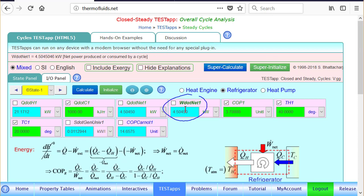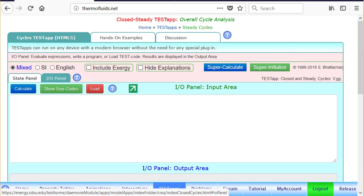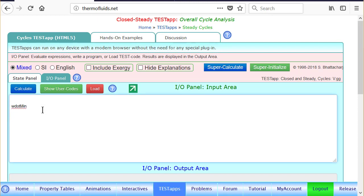we can also find the minimum power required because we know the Carnot COP and we know how much heat has to be extracted. So you go to the IO panel for that and write an equation. Suppose we declare a variable called W dot minimum equals, that'll be Q dot C